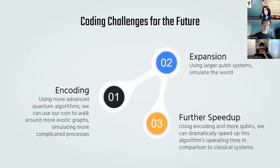There are a couple of future directions we'd like to pursue if we had more time to work on this algorithm. The first is encoding. We'd like to create more complicated graphs and more unique ways to move around them. This will allow us to simulate more complex tasks. Next, we'd like to expand our systems. Currently, we were only able to run them on very limited systems with few qubits. With more qubits, we can simulate more interrelated tasks.